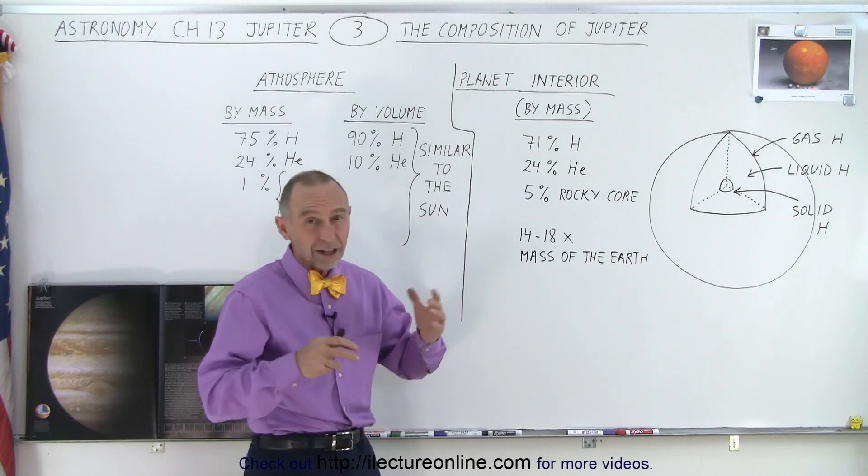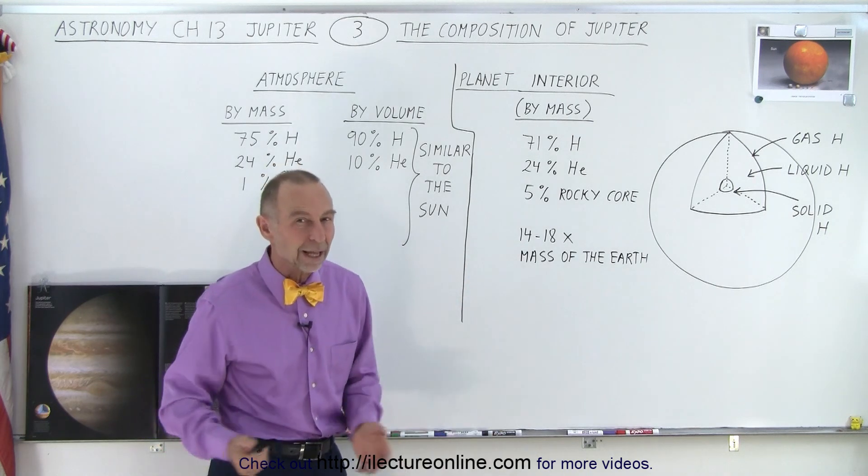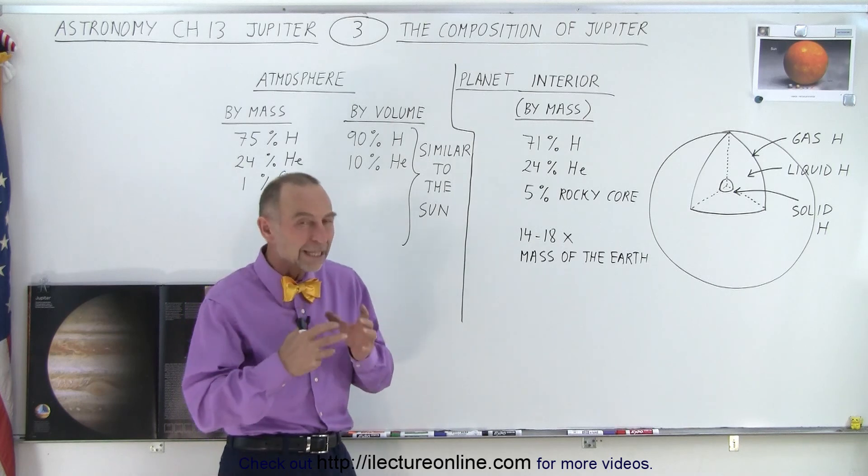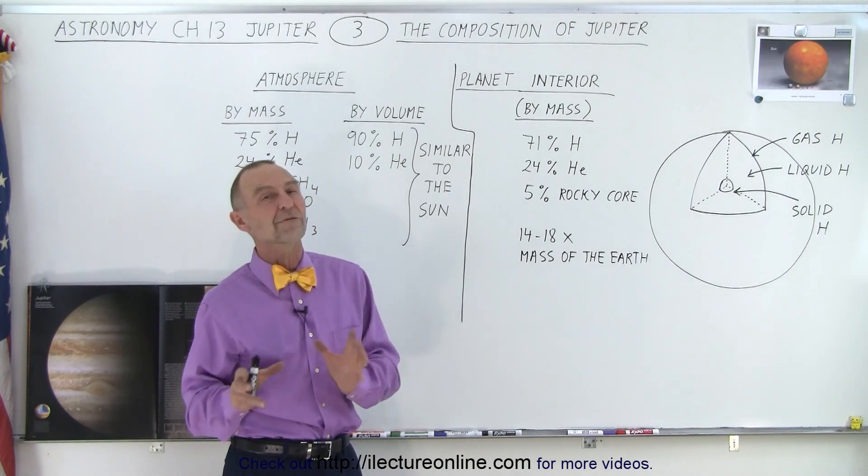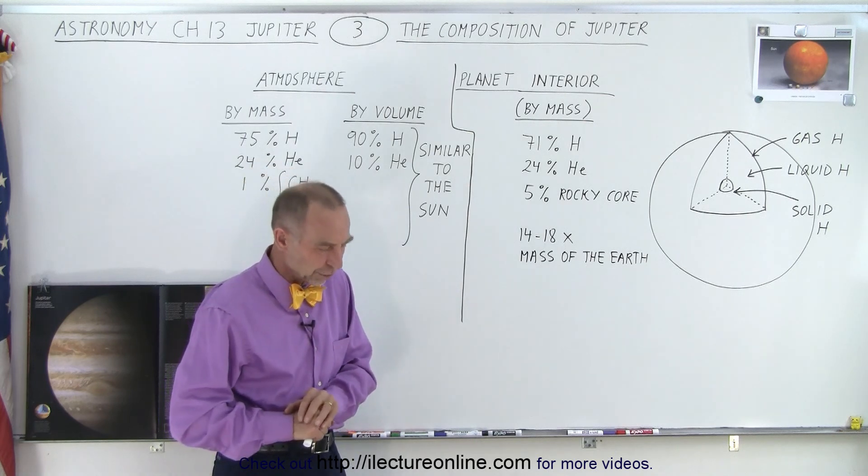At first, they thought that the core is maybe about 5 or 6 or 7 times the mass of the Earth. And since then, they've recalculated things. And now they've come to the conclusion that it's probably somewhere between 14 and 18 times the mass of the Earth.